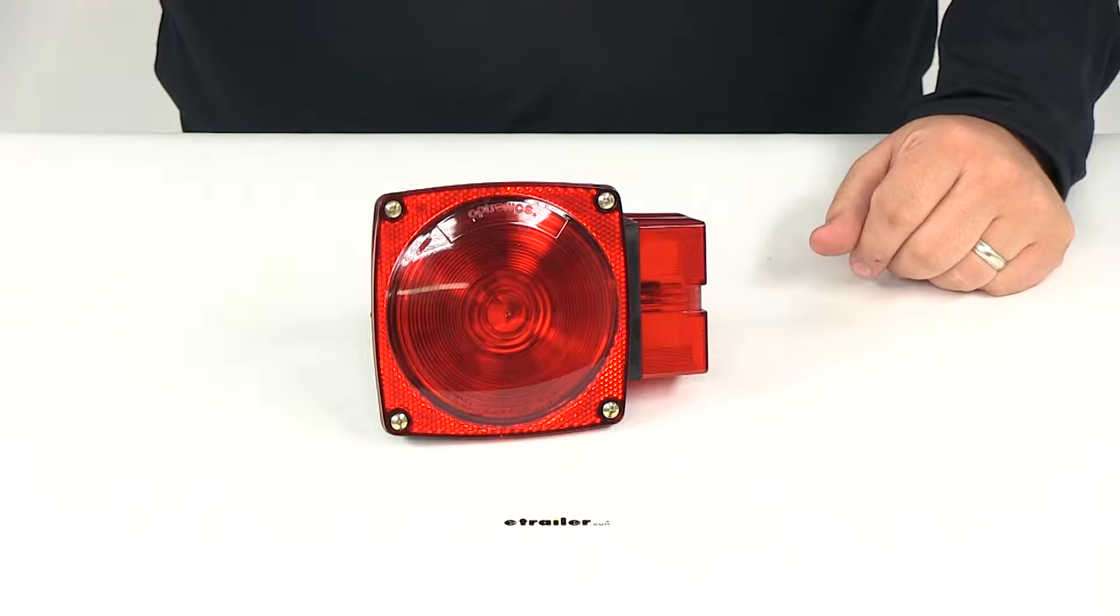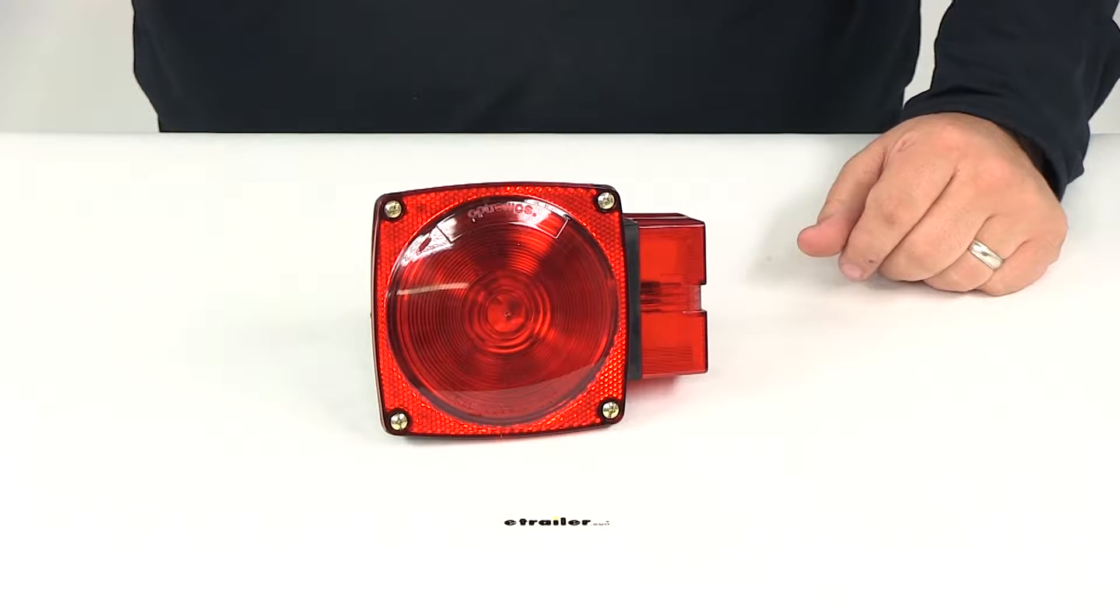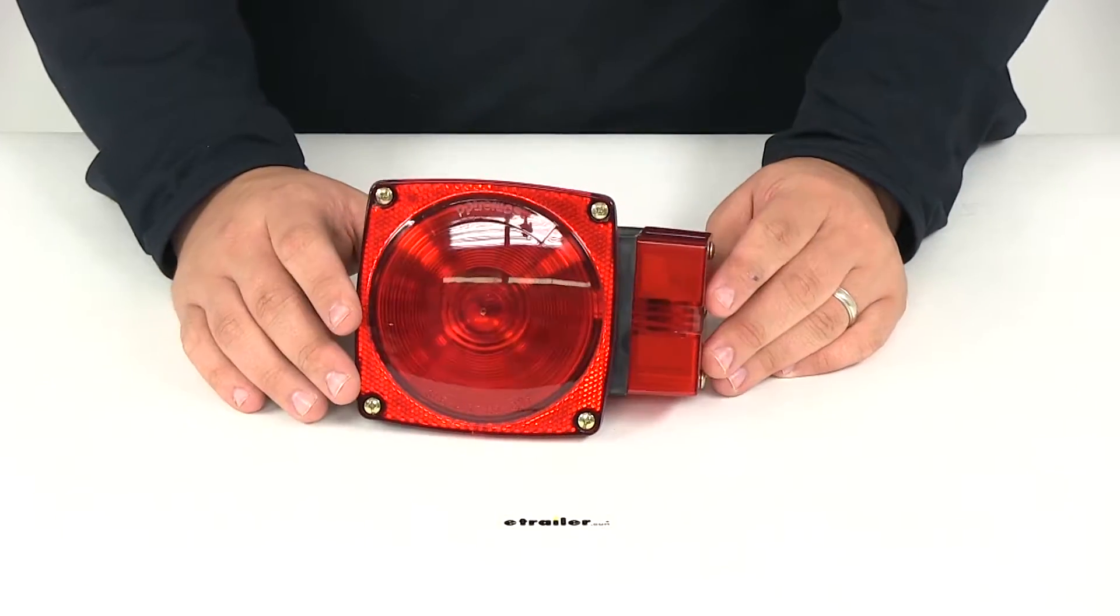Today we're going to be reviewing part number ST-2RB. This is the square trailer light for the right hand side of your trailer from Optronics.